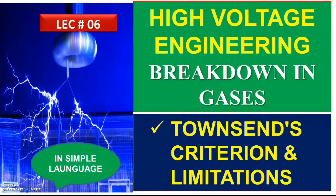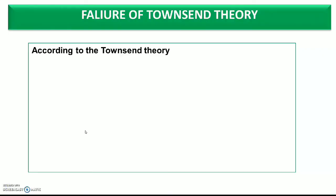Today is lecture number 6, and we are going to discuss the failure of Townsend's Theory — meaning Townsend's theory does not cover the actual practical conditions, which is why we need to understand how and where it differs.